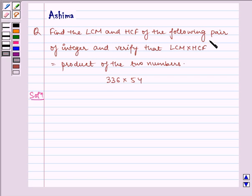Find the LCM and HCF of the following pair of integers and verify that LCM into HCF is equal to the product of the two numbers. We have 336 into 54.